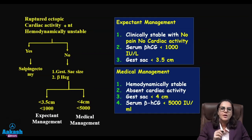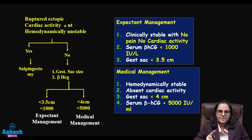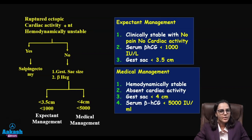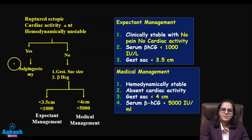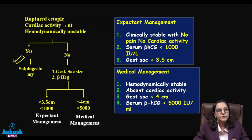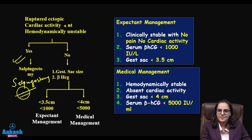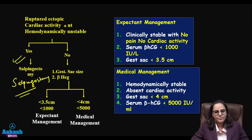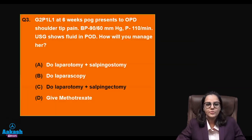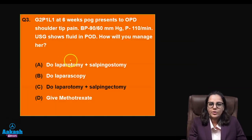Here is a simplified chart on how to deal with ectopic pregnancy questions. If the patient has a ruptured ectopic, cardiac activity is present in the gestational sac, or the patient is hemodynamically unstable — do not think about anything else; no gestational sac size, no beta-hCG — go directly for salpingectomy. Only if the patient wants to preserve fertility or the other tube has been previously operated upon, go for salpingostomy.